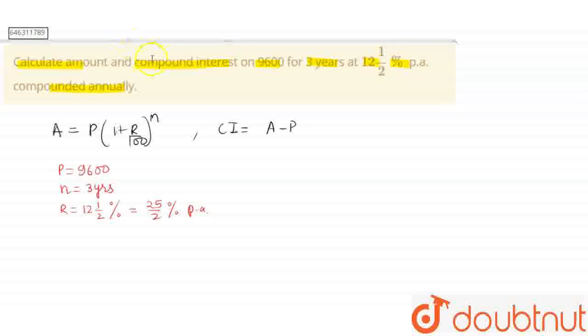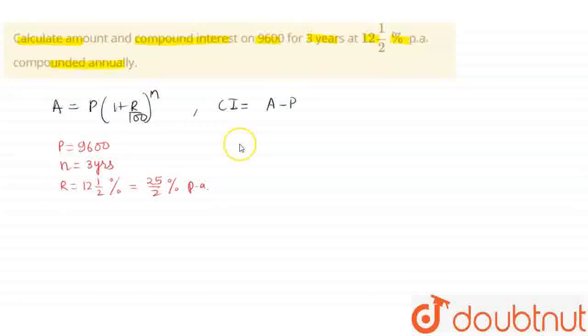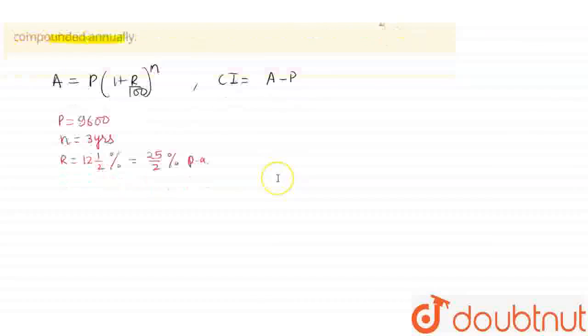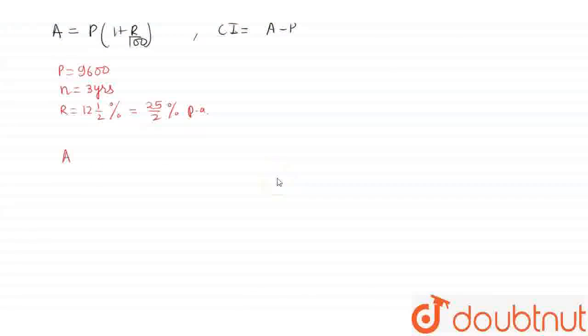Substituting the values in the amount formula, we get A = 9600 × (1 + 25/(2×100))^3.